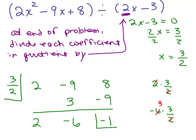But now we have to pay attention. At the end of the problem, divide each coefficient in the quotient by that 2, okay? Whatever this is, you have to divide these coefficients by that number. That's the trick.